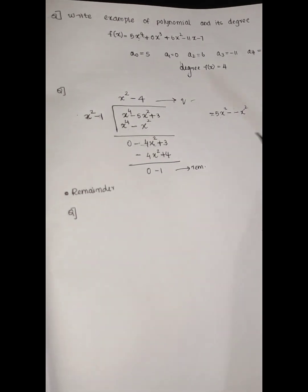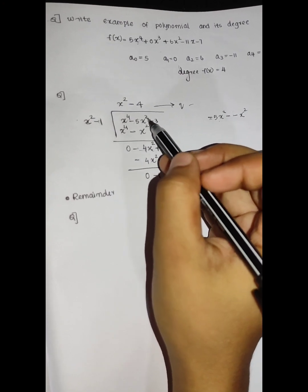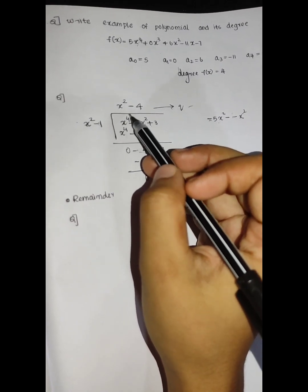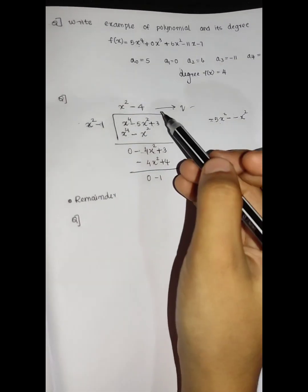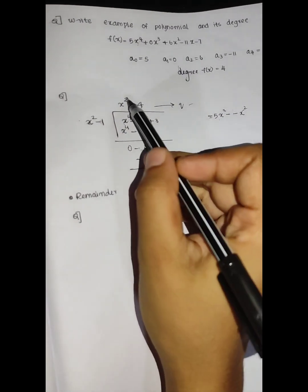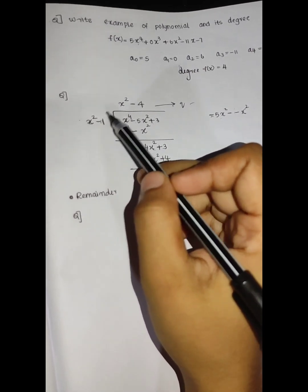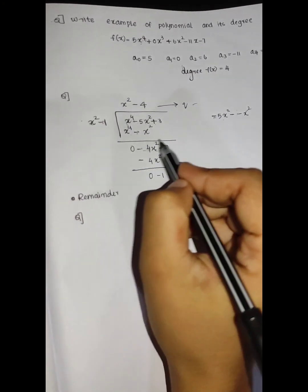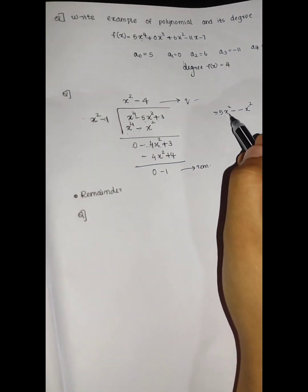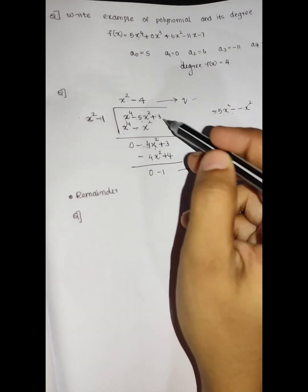Next, we have a division. Consider x raised to 4 minus 5x squared plus 3. We divide this. x raised to 4 is the highest power. That means minus 5x squared minus x squared is minus 4x squared, and we are going to have plus 3.